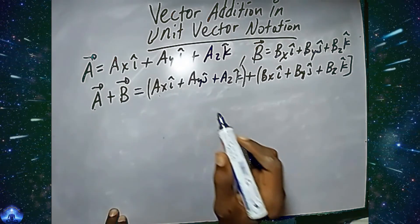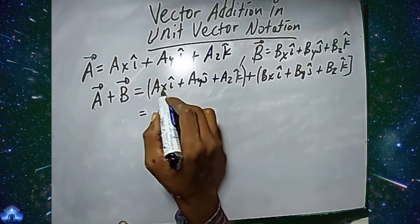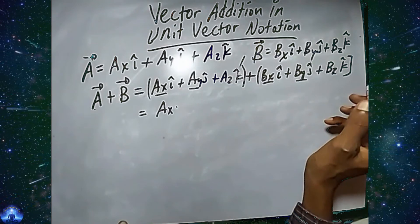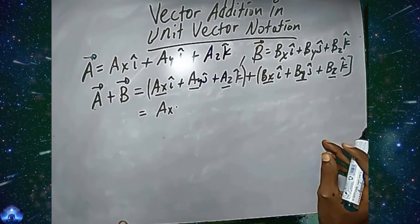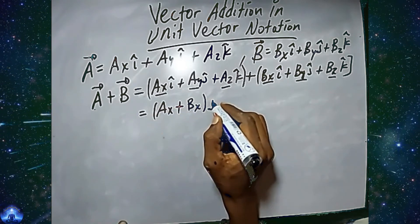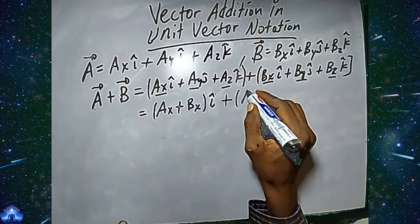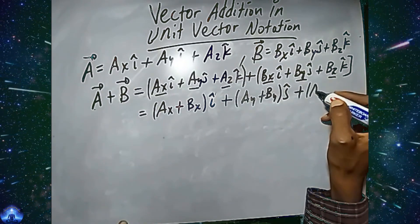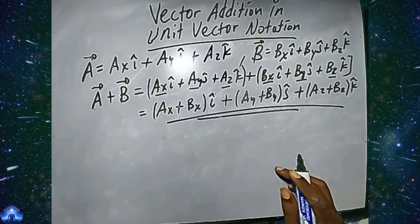We collect similar components with the same unit vector: since Ax and Bx are in the same unit vector i-hat, Ay and By are in the same unit vector j-hat, and Az and Bz are in the same unit vector k-hat, we get A plus B equals (Ax plus Bx) i-hat plus (Ay plus By) j-hat plus (Az plus Bz) k-hat. This is the addition of two vectors using unit vector notation.